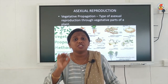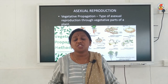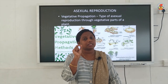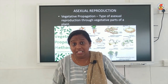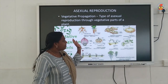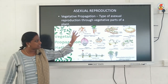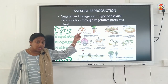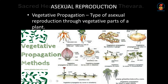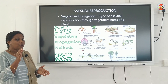If a vegetative part of a plant is used as a propagule — propagule means the part used for propagation, the part used for the production of a new individual — you call it vegetative propagation. It is a type of asexual reproduction. Different vegetative propagules are shown in this slide. Sometimes roots can be used as propagules, sometimes underground stem can be used as propagules, and sometimes branches, stem, or leaves can be used as propagules.